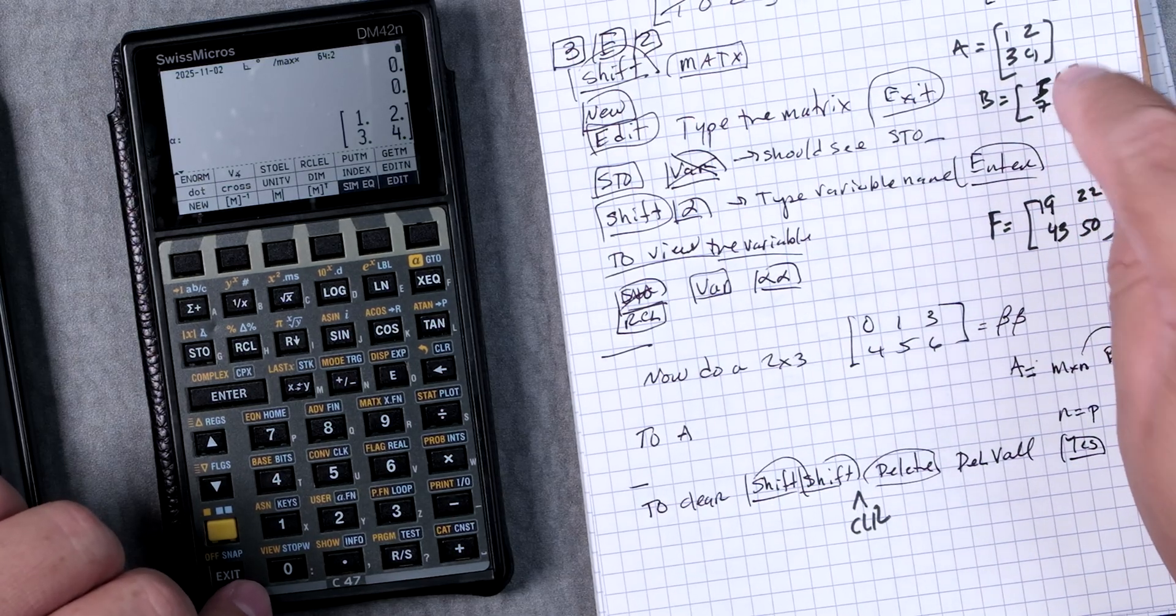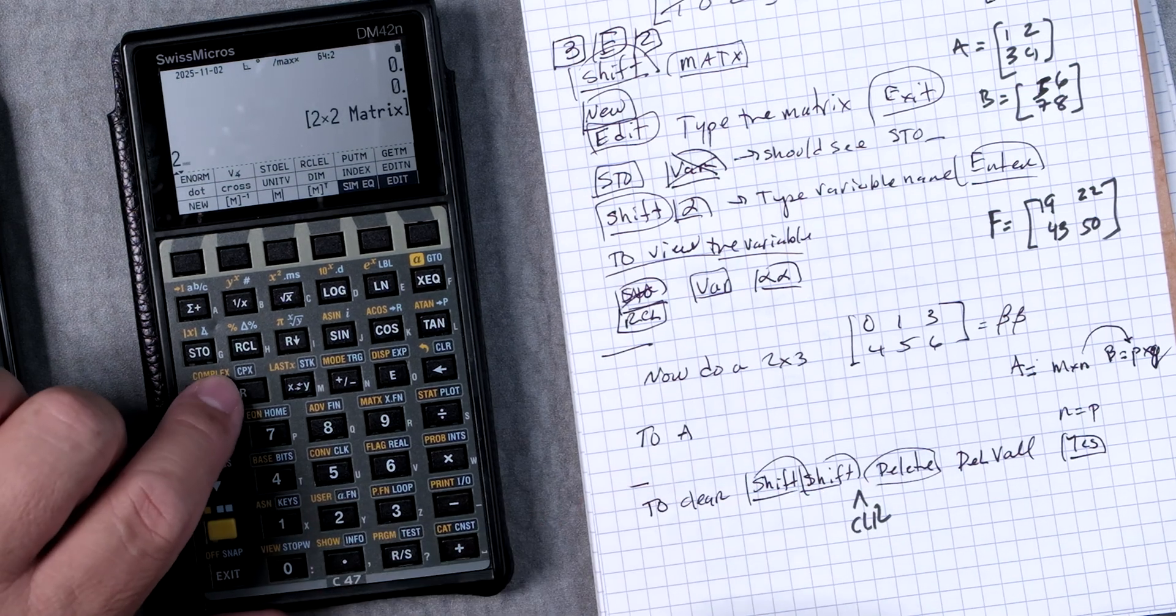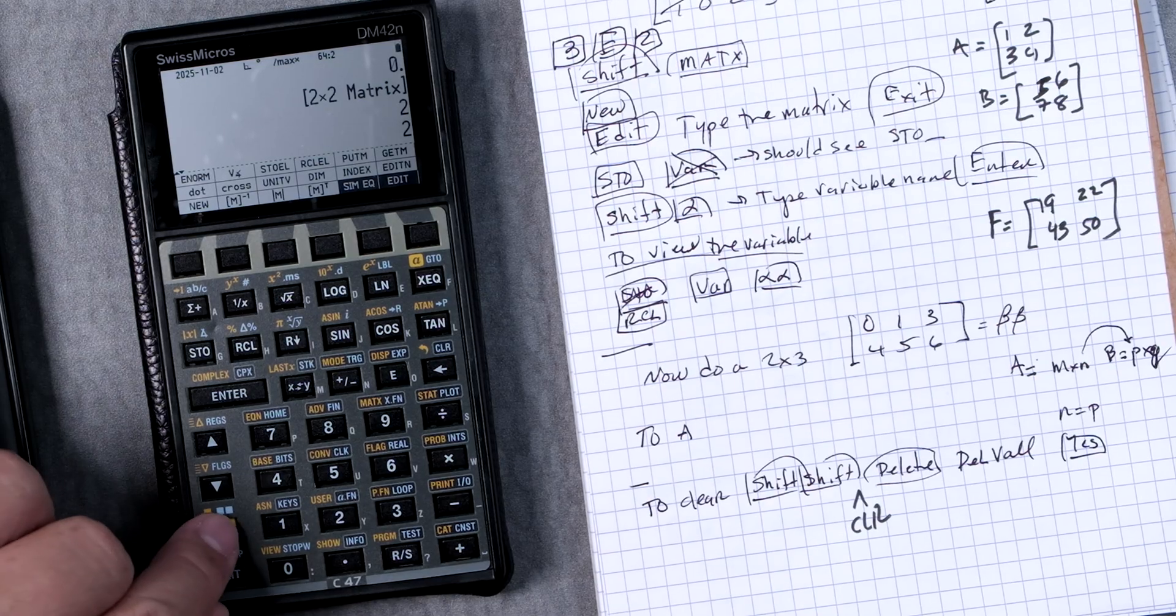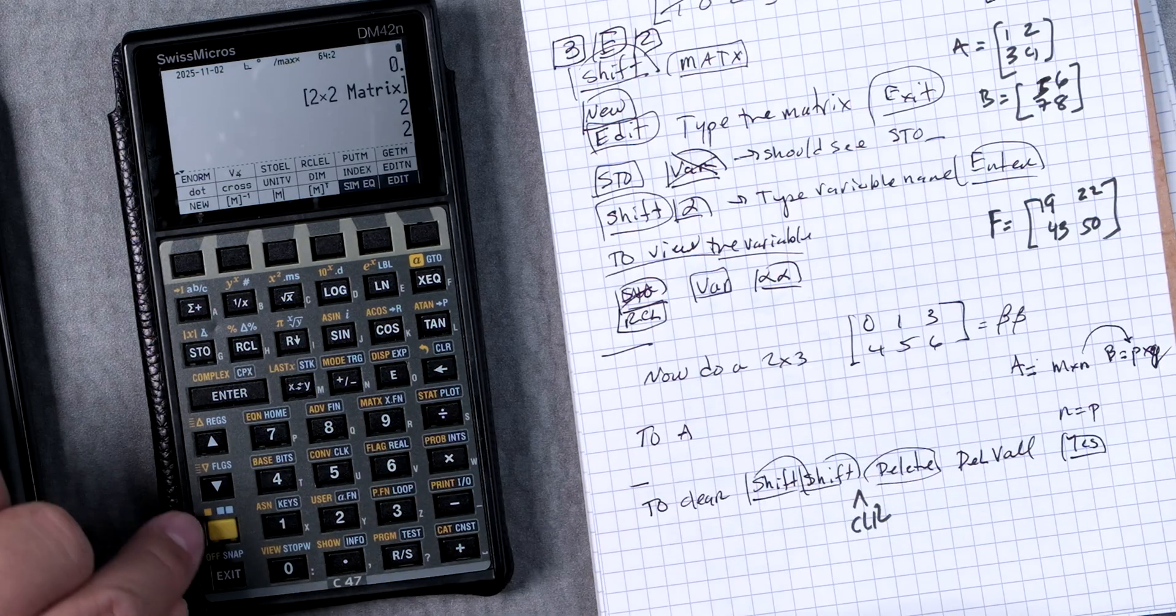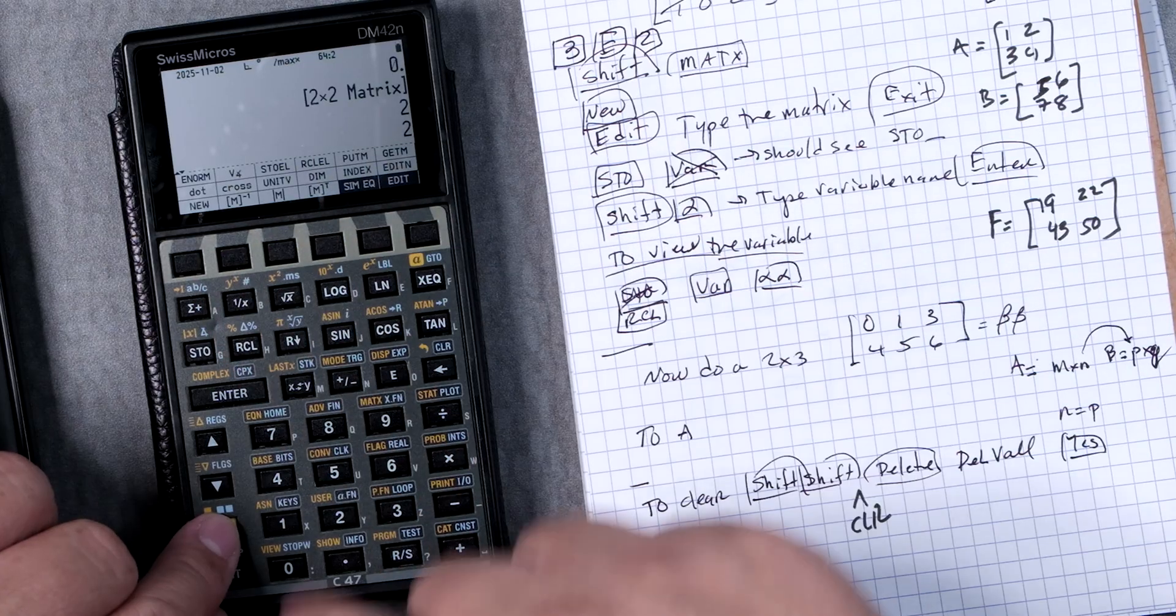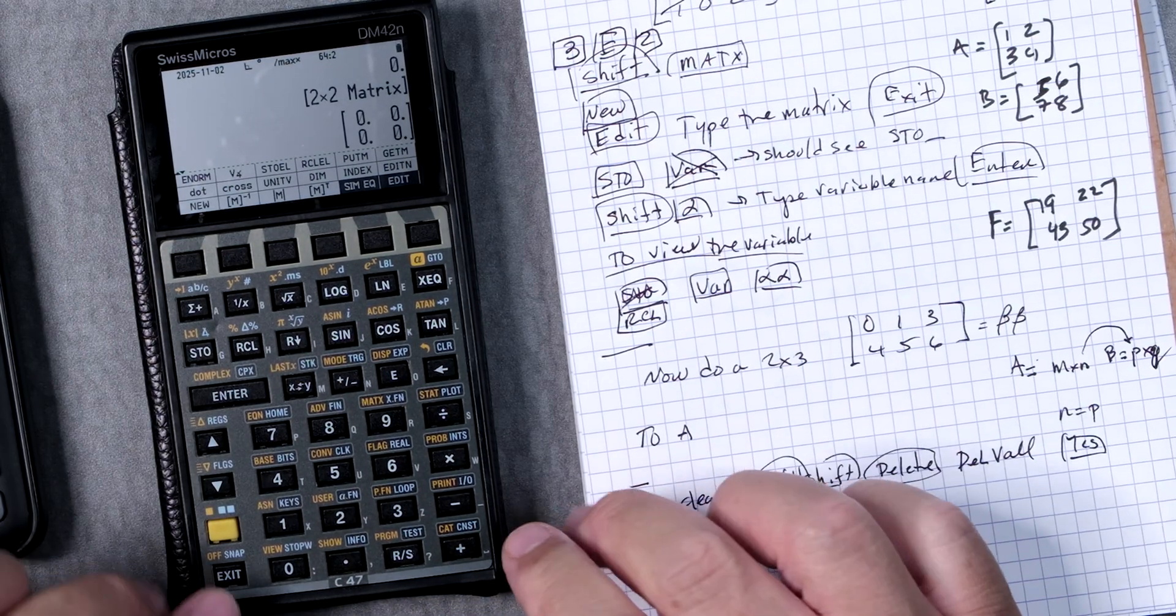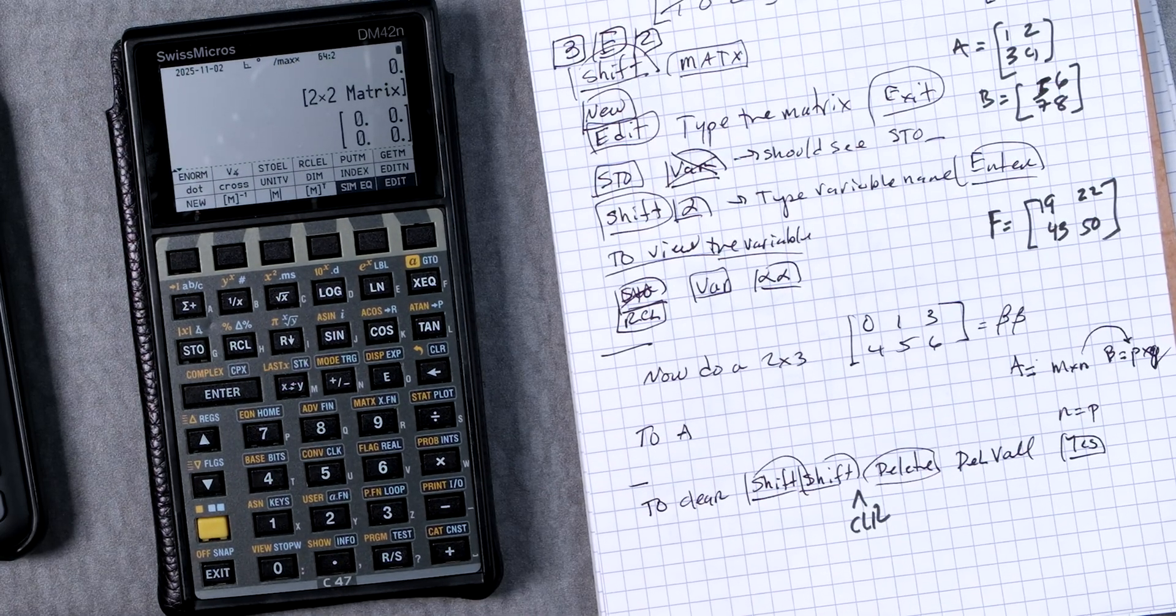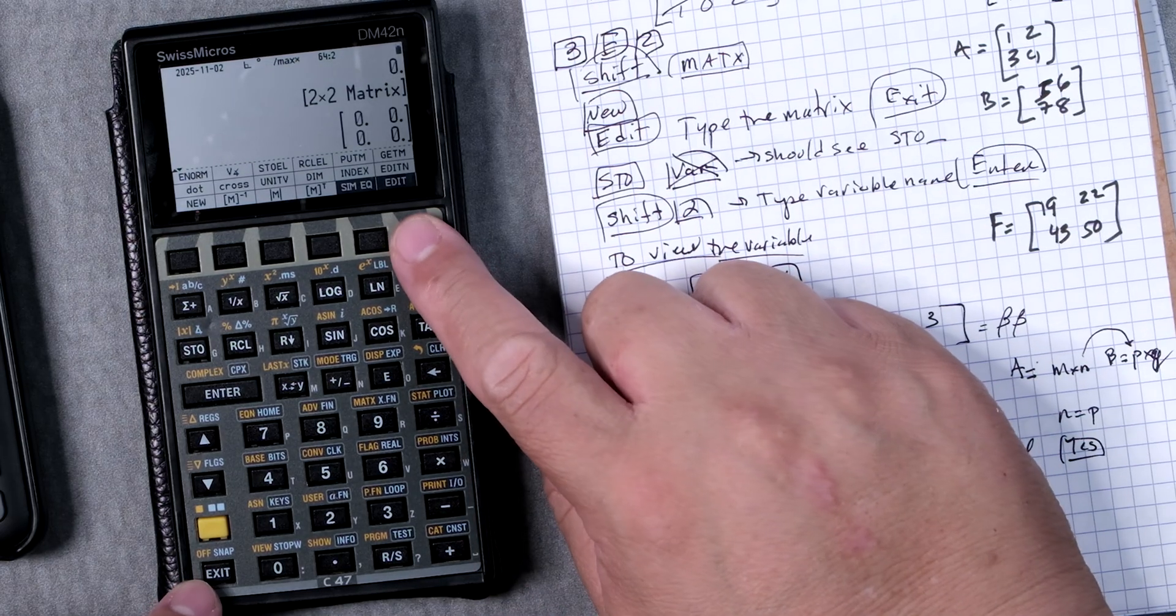Now let's do the next matrix. We go to enter, enter. Two by two. Then we're going to go to shift and then matrix. Press once for the yellow and then you get this menu and you want to do a new matrix. Now if you feel we're going too fast then pause and go back. But the more you do this the more intuitive it will be. Press edit.